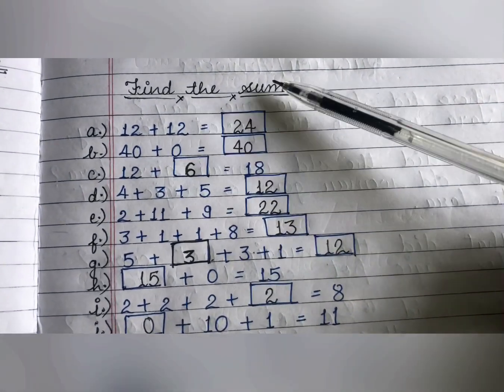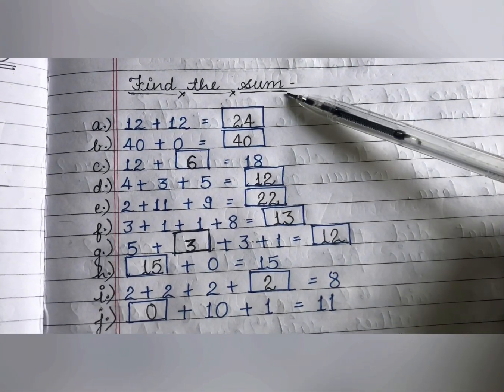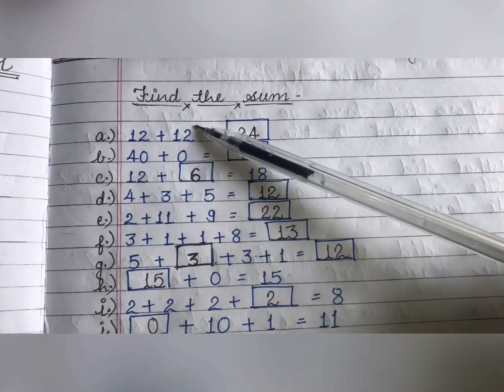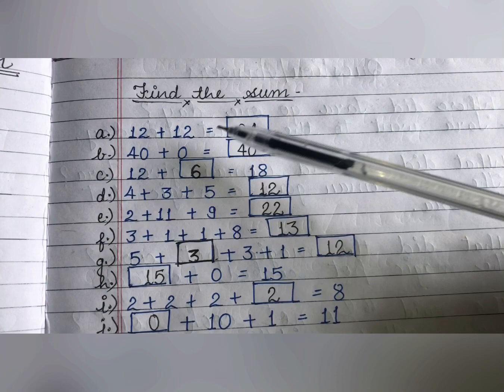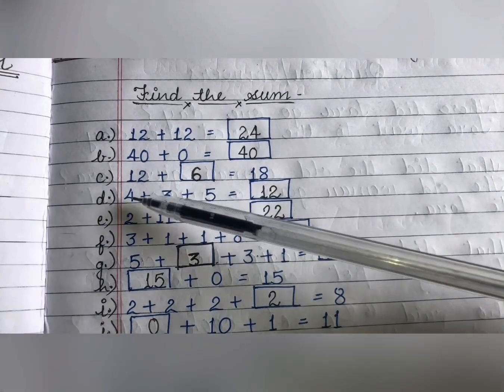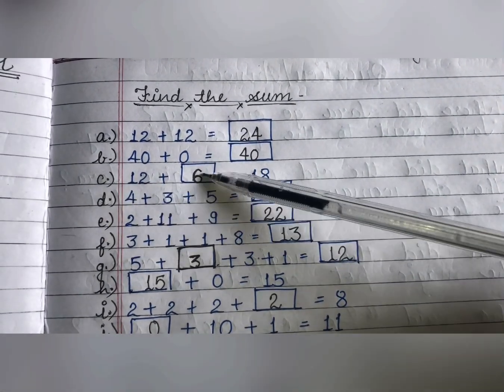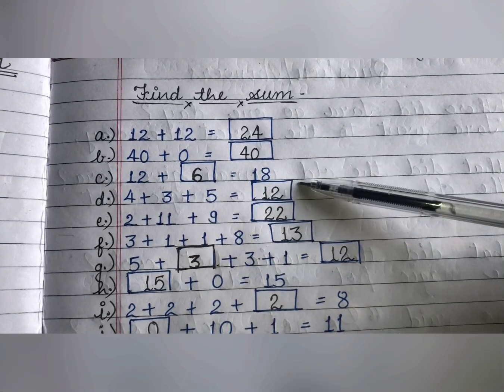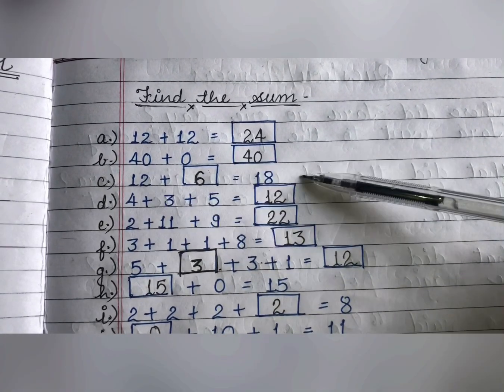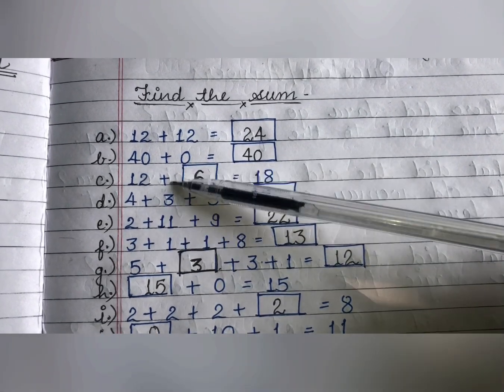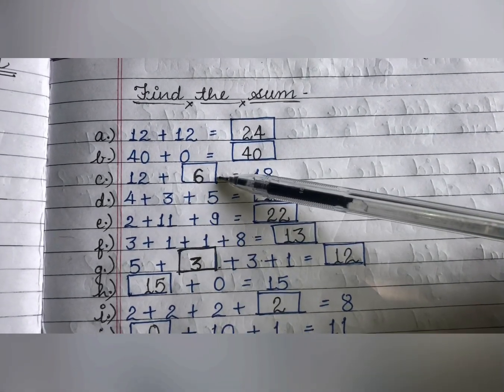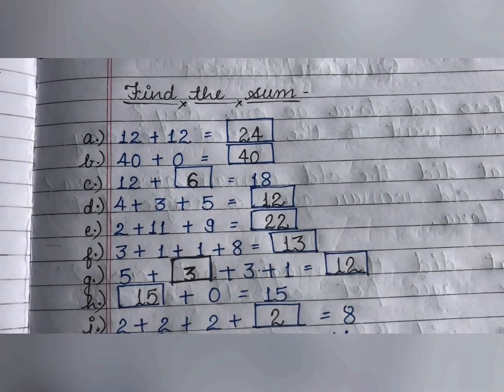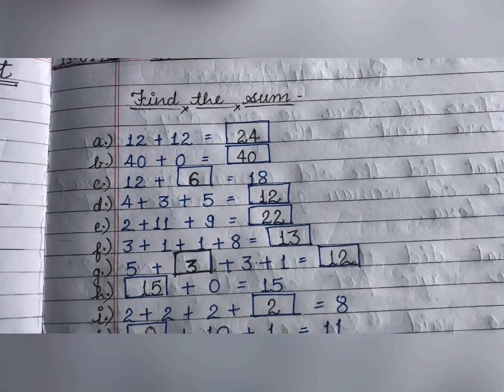Now listen, these are very simple sums, you already have done them before many times. Simple addition, 12 plus 12, 24. 40 plus 0, you will get 40. Now you have to choose one number which will add to 12 and will give you 18. So that number is 6. You can find that number out by subtracting 12 from 18.